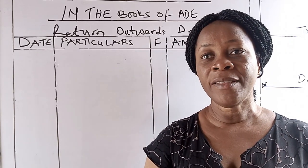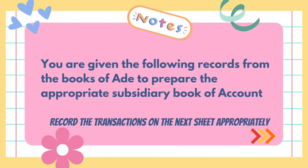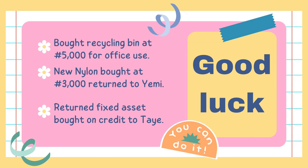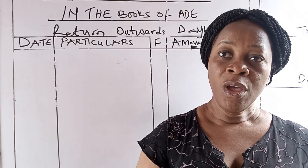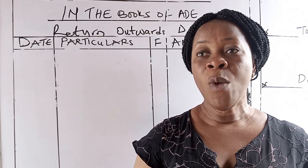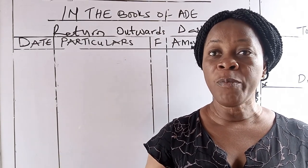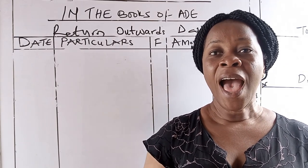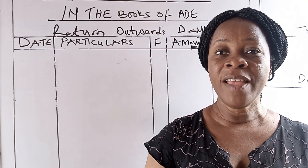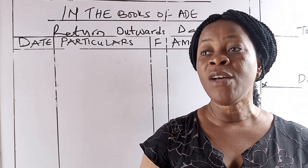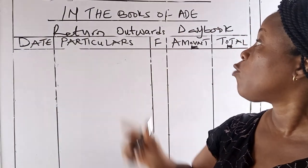Now, January 21st: return goods — that is, return television sets worth 3,500 Naira to Tolu. The appropriate book of original entry for this transaction is the Return Outwards Day Book, because we are representing a firm. Whenever a firm returns goods to any of its suppliers, it is recorded in the Return Outwards Day Book. The transaction — return television worth 3,500 Naira to Tolu — will be recorded in the Return Outwards Day Book.